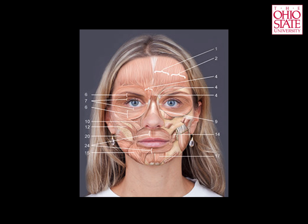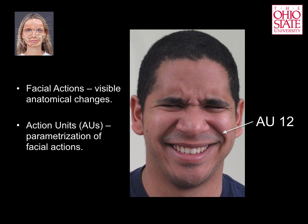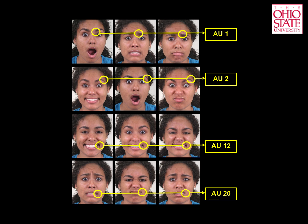Let us now see the result that AU12 has on an image. AU12 is a contraction of a cheek muscle, which results in the pulling of the lips. This yields clearly visible image changes, as you can see. We define facial actions as these visible changes, and use action units as a way to annotate them. Here are the four action units we included in our study: AUs 1, 2, 12, and 20. Note that each AU is common in many facial expressions. In fact, action units are the building blocks of facial expressions, allowing us to construct many facial expressions of emotion, produce language, and other nonverbal communication signals.